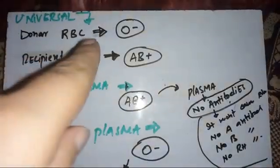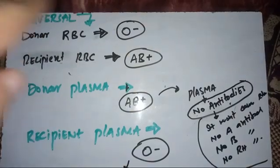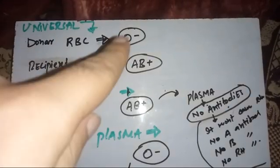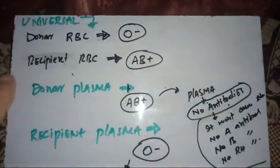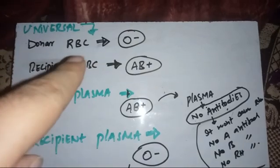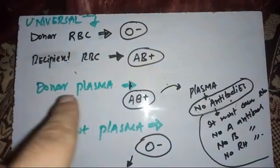For the MCQ on universal donor of RBC: the criterion for universality is no antigen. O negative has no antigen — O has no A or B antigen and negative has no Rh antigen. For universal recipient of RBC, we need a blood group with no antibodies. That is AB positive, which has all the antigens but no antibodies.